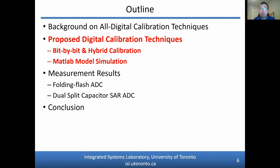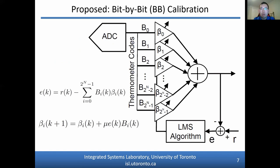I will now talk about the proposed digital calibration algorithms. A more generic approach is taken with the bit-by-bit calibration. Instead of adapting N alpha coefficients — one for each bit of the ADC as in radix calibration — we adapt 2^(N-1) beta coefficients, one for each thermometer-coded digital value. Effectively, this adaptively populates a lookup table for each possible digital output code of the ADC. Like radix calibration, bit-by-bit calibration uses the LMS algorithm with a known ideal reference to find these beta coefficients. In principle, it is also possible to use bit-by-bit calibration in a background calibration method to determine the beta coefficients.